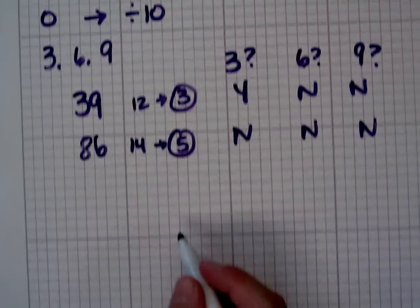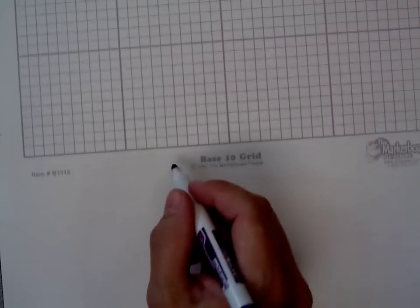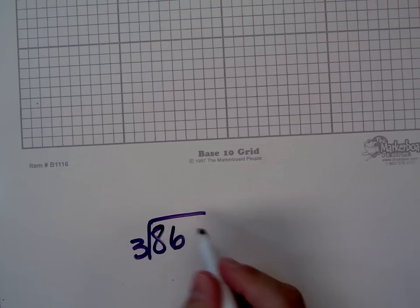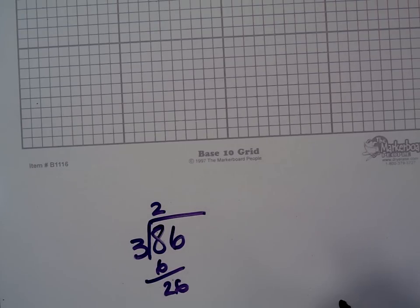How do I know that? I actually divided it out in my head. But you could take 86 divided by 3. That's 2. 6 leaves me 2. And 3 doesn't go into 26 evenly.